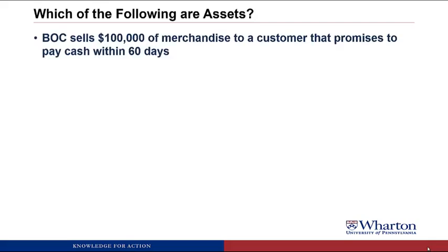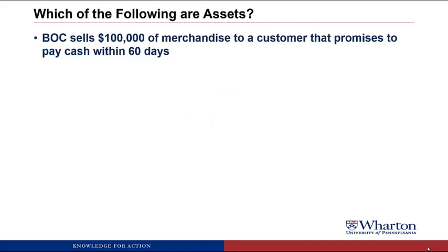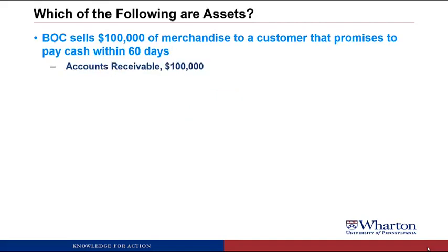BOC sells $100,000 of merchandise to a customer that promises to pay cash within 60 days. This will be an asset called accounts receivable. It's an asset because there was a transaction where we delivered goods to a customer, and in return we got a promise to pay cash. The value of the future benefits can be reasonably estimated because it's the amount the customer owes us on the invoice — $100,000.